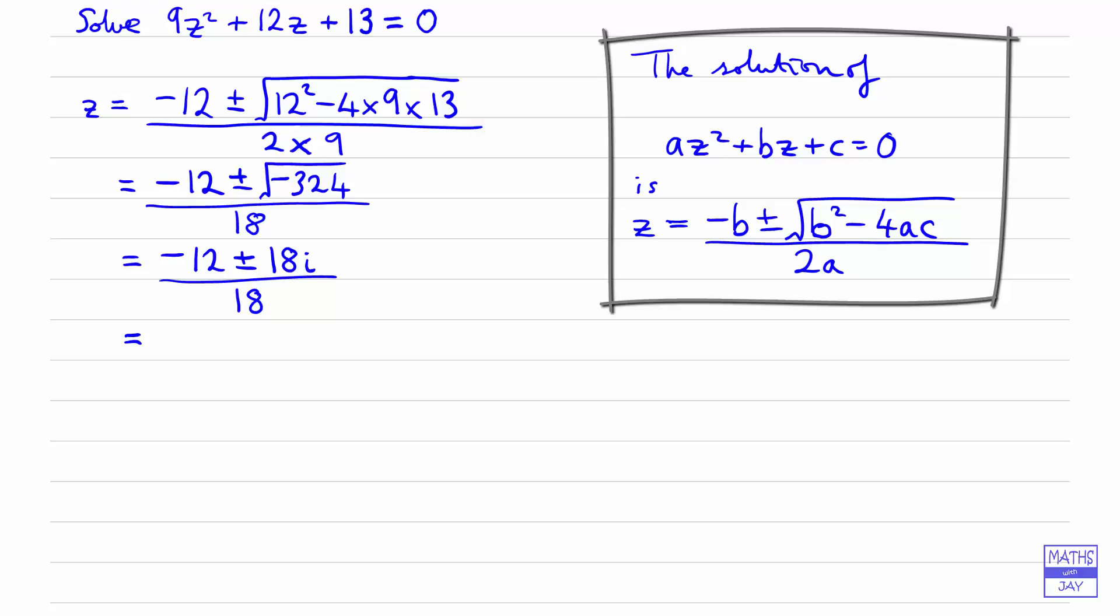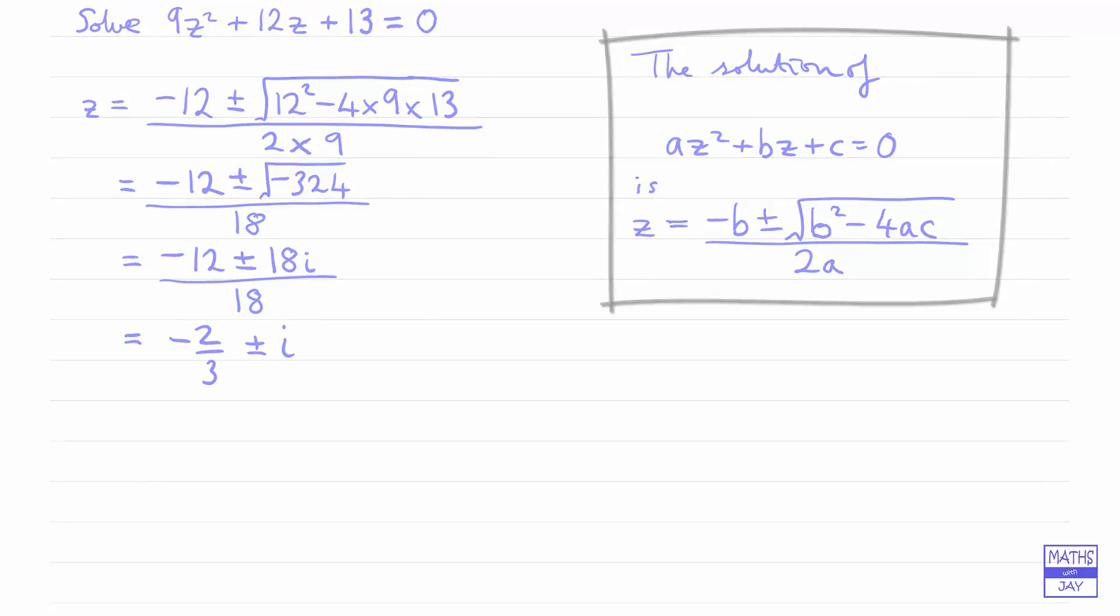So we've got minus 12 over 18, so that's minus 2 thirds. And then we've either got plus or minus—well, 18 over 18 is obviously 1, so just plus or minus i. So the solutions are minus 2 thirds plus i and minus 2 thirds minus i.